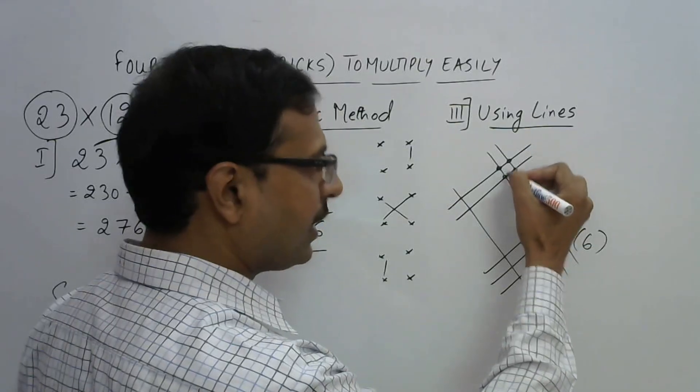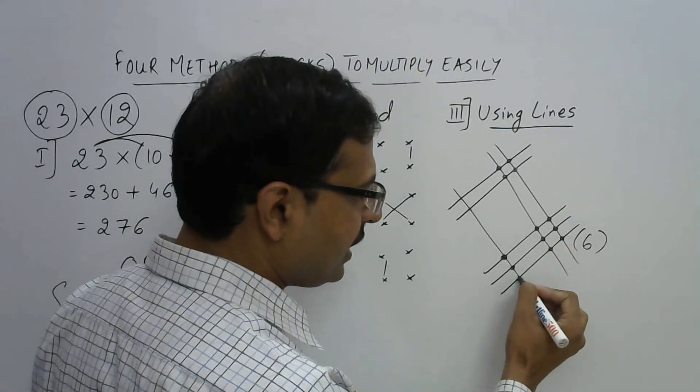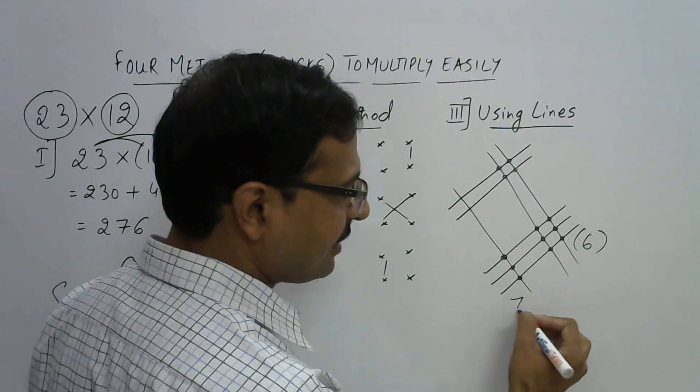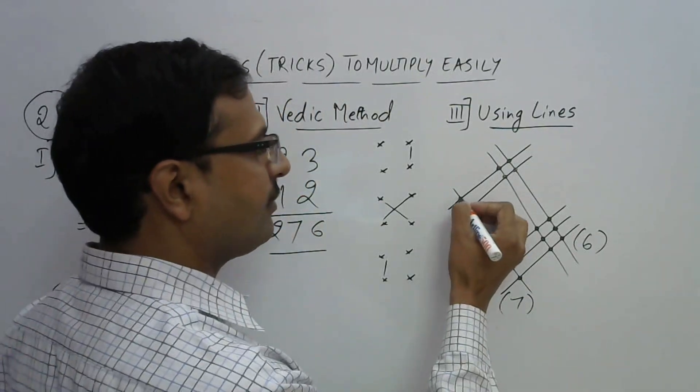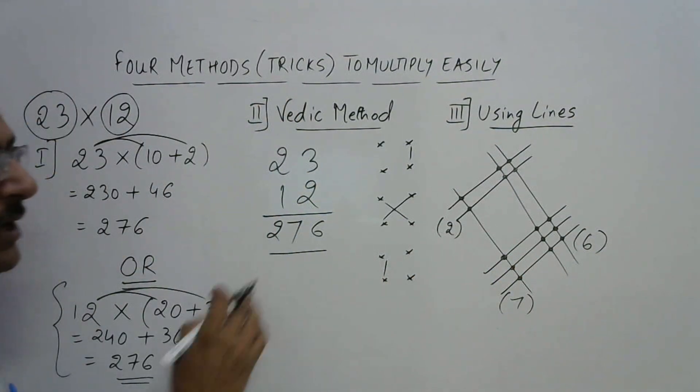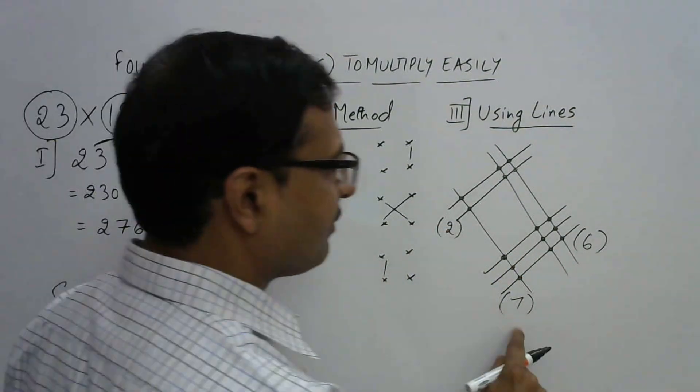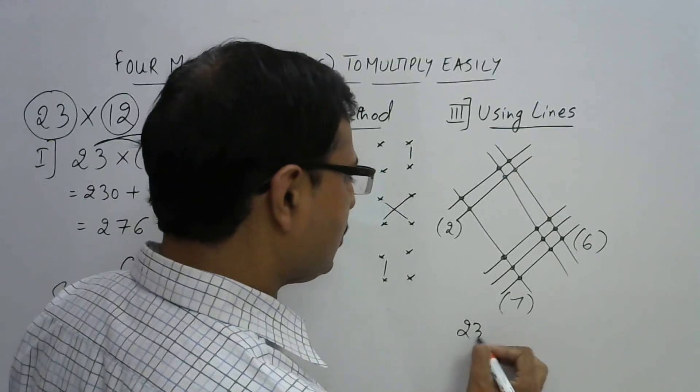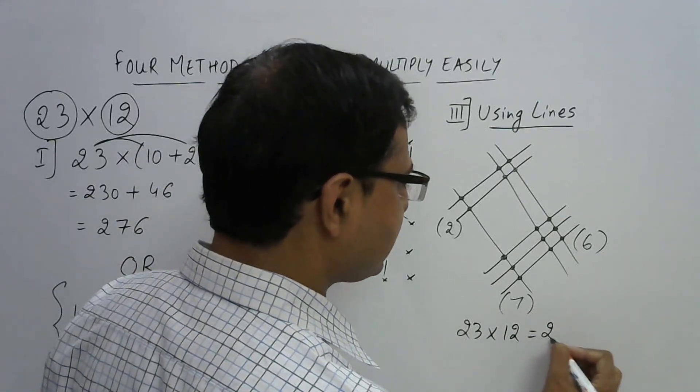So 1, 2 and 3. So add 4 plus 3, 7 and here you have 1, 2. So 2 and can you see we have obtained the answer here 276. So 23 into 12 is 276.